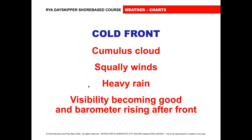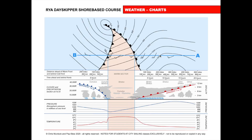They say on a good cumulonimbus, the energy going on there is equivalent to about 10 atomic bombs, and it can weigh over a million tonnes in moisture. So the cold front — we get cumulus clouds, squally winds, heavy rain. Visibility becomes good. And the air pressure on the barometer will rise after the front.